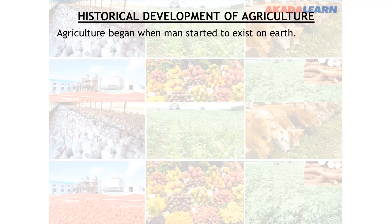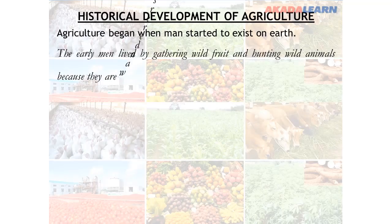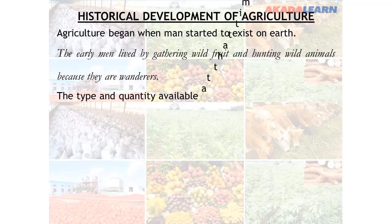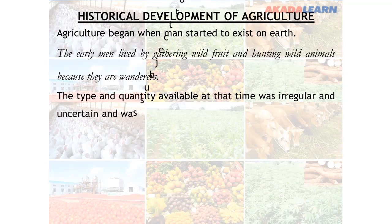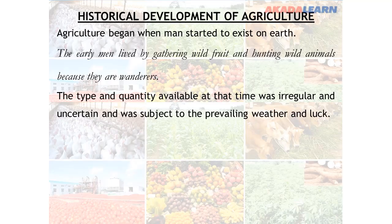Historical development of agriculture. Agriculture began when man started to exist on earth. The early men lived by gathering wild fruits and hunting wild animals because they were wanderers. The time and quantity available at that time was irregular and uncertain, and was subject to prevailing weather and luck.